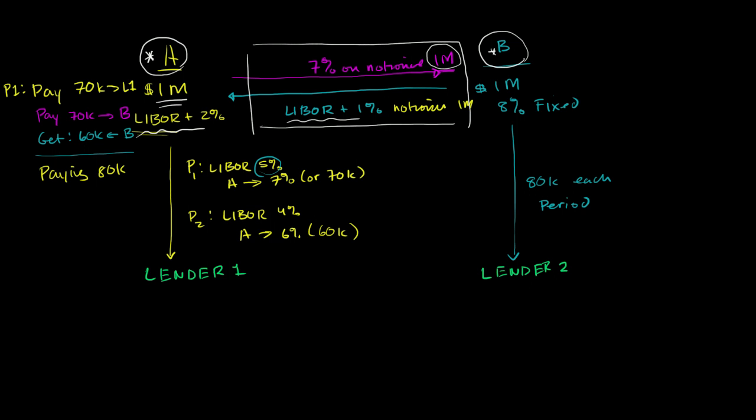Now let's think about what happens in Period 2 when LIBOR changes. In Period 2, LIBOR changed to 4%, and so A would have to pay 4% plus the 2% on its loan, which is 6% or $60,000.